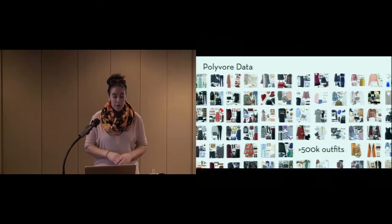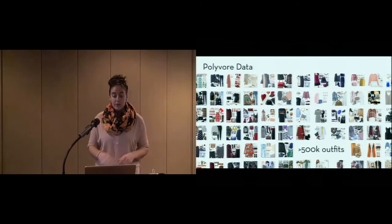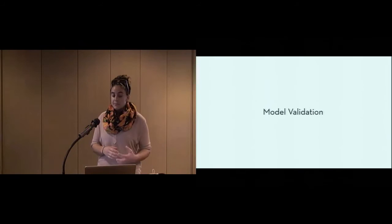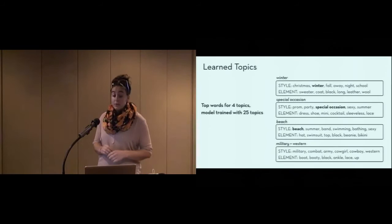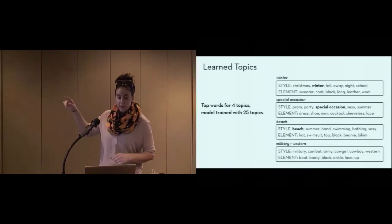We train our models with over half a million outfits we collect from Polyvore, and find that the resulting topics are quite coherent. We'll now show some of these topics and explain the validation process that's necessary to set one model parameter, specifically the right number of topics, highlighting the trade-off necessary between topic coherence and concept granularity. Here, we show top words in both the style and element languages for four topics from a model trained with 25 topics. And I've labeled each one here with one or two of the style words to highlight the core concept.